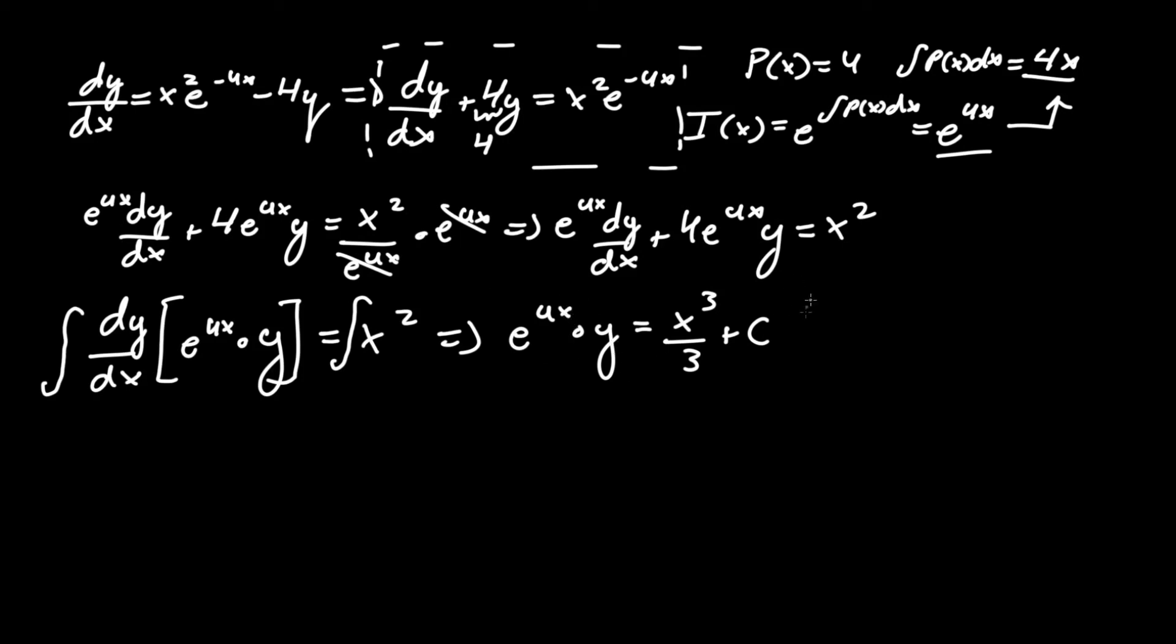Now, all we've got to do is isolate y by dividing everything by e to the 4x. So, y equals x cubed over 3 e to the 4x plus c over e to the 4x. And that is our answer.